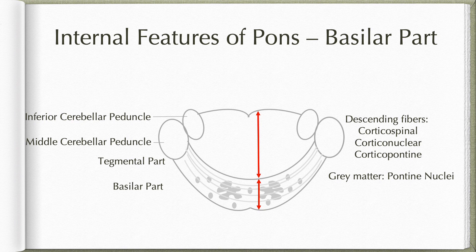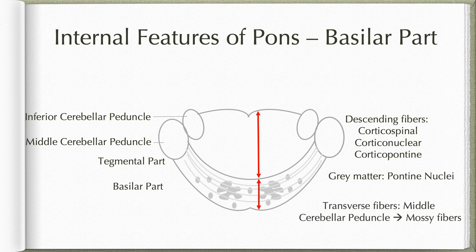The pontine nuclei, apart from receiving fibers from the cortex, also receive subcortical projections from the superior colliculus, lateral geniculate body, and pretectal nucleus, as well as from the dorsal column nuclei, trigeminal nuclei, and reticular formation. The axons of these neurons cross over to the opposite side, run transversely, and form the contralateral middle cerebellar peduncle, projecting to the cerebellum as mossy fibers to the cerebellar cortex. This crossing is important because the cerebral cortex has contralateral representation, whereas the cerebellar cortex has ipsilateral representation.